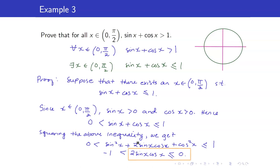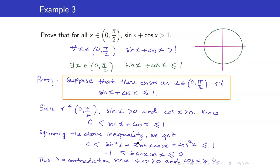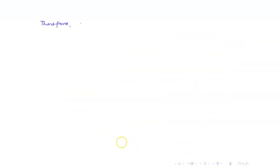However, since sin²x + cos²x = 1, when we subtract 1 everywhere we get −1 < 2 sin x cos x ≤ 0. This means sin x cos x is negative or zero, but that cannot be, because sin x and cos x are both positive. This is a contradiction. Therefore, our initial assumption that there exists an x such that sin x + cos x ≤ 1 is false. Therefore, for all x in (0, π/2), sin x + cos x > 1.